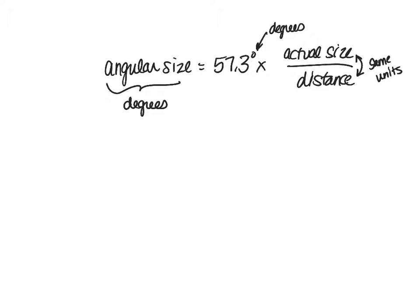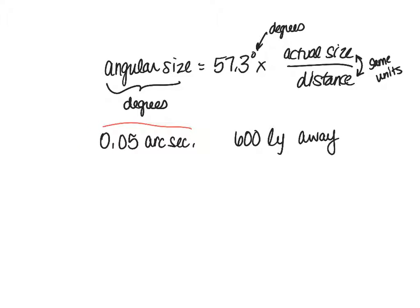So you were told this was the information you had: that the star had an angular size of 0.05 arc seconds. Now that's not a degree. And it was about 600 light years away. So the arc seconds is the angular size, and the light years away is the distance.